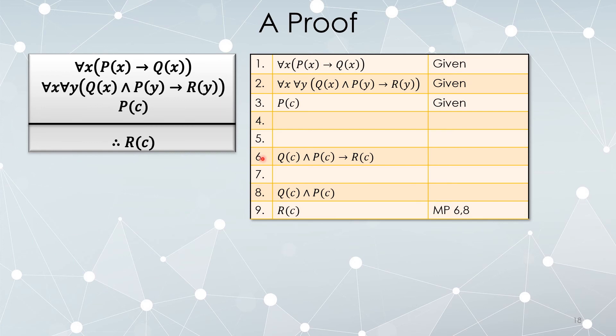Now here are a couple of steps that are going to be done along the way. Suppose 6 and 8 can be constructed. Q(c) and P(c) implies R(c). Q(c) and P(c).